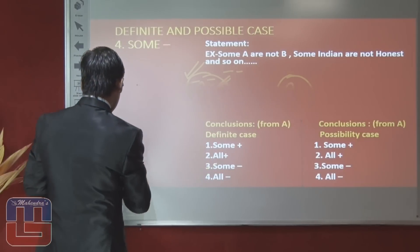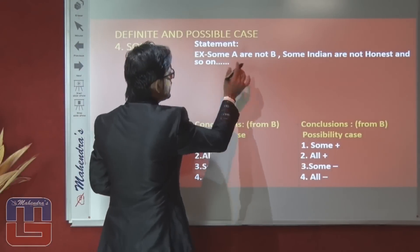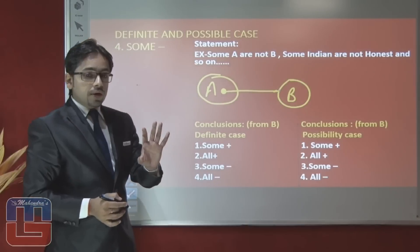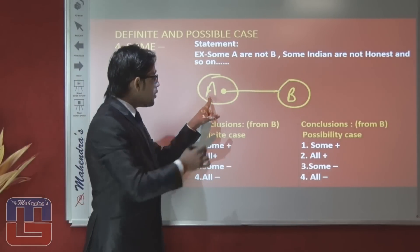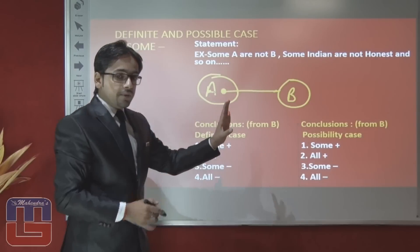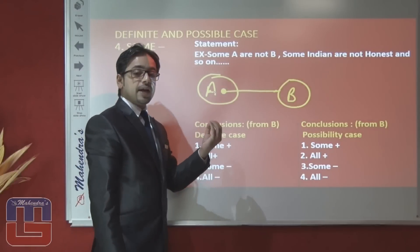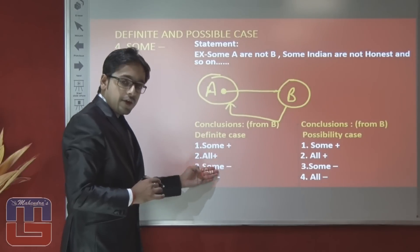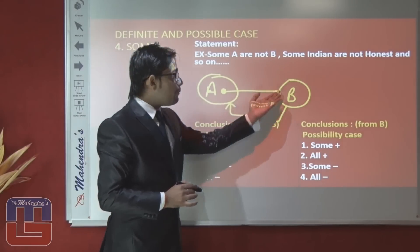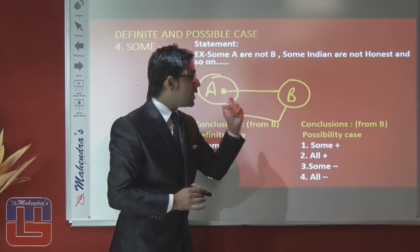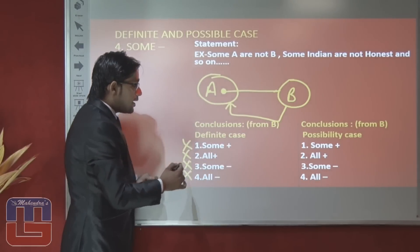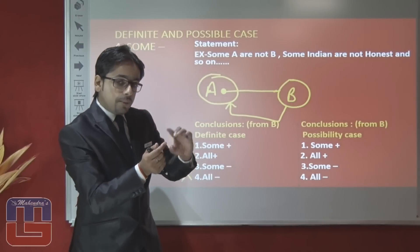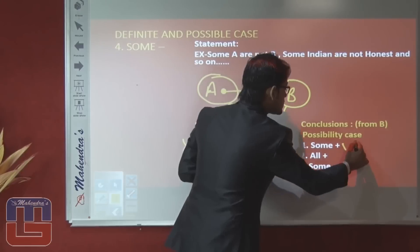Now let's talk about B to A when the statement is 'some A are not B.' We cannot go beyond the statement — the statement talks about some A are not B. We don't have any information regarding B to A, so in definite manner we cannot conclude anything about B. Neither positive nor negative information is given regarding B. So all definite cases are false. Whenever there is no information given from one variable to the second, then all possible cases are true.